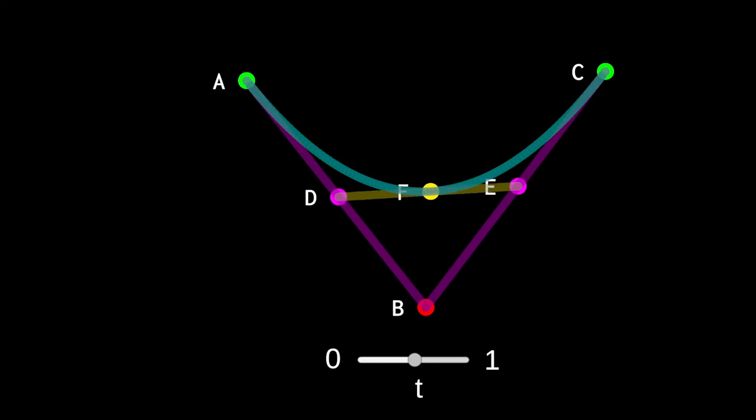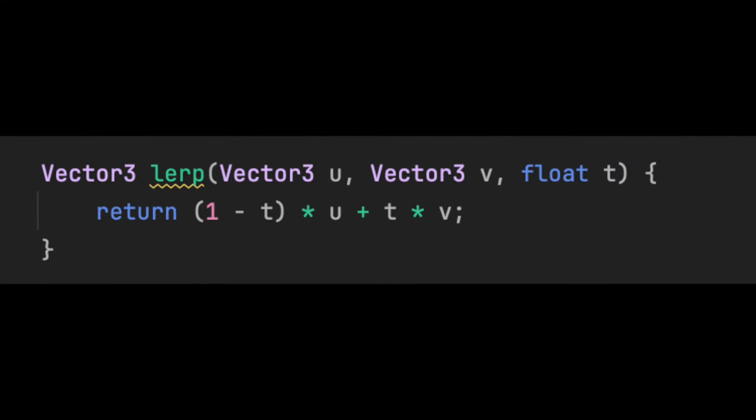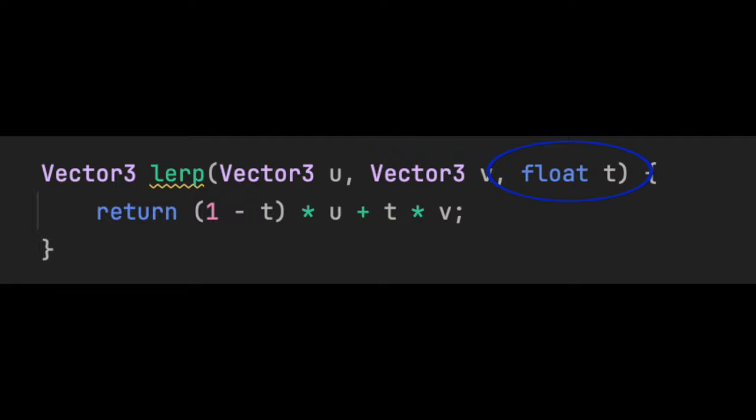Mathematically, we can move a point along a line between two points by creating a linear interpolation function, or LERP for short. The LERP function takes in the start point, the end point, and a parameter T. T defines how far along the line we want to move. When T is 0, LERP outputs the start point.